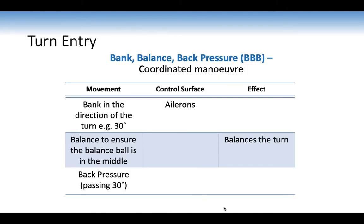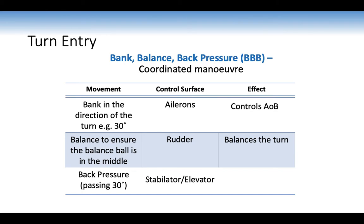The turn is a coordinated manoeuvre: bank, balance, back pressure — all done simultaneously. Bank is in the direction of turn to 30 degrees, using aileron to control angle of bank. Balance ensures the ball is in the middle, using rudder. Back pressure past 30 degrees uses the stabilator or elevator to control pitch.